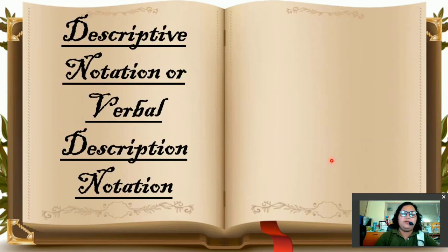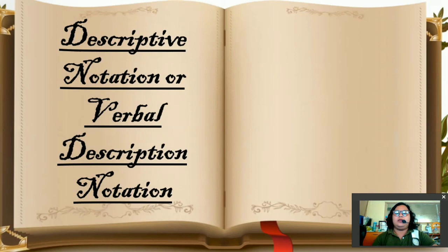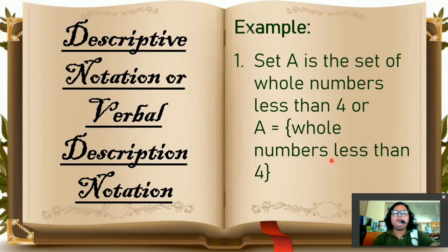Descriptive notation or verbal description notation is a method of describing a set in words. Example, set A is the set of whole numbers less than 4. Or, we can use capital letter equals, then the symbol braces, then we write the description inside the braces. So it would be whole numbers less than 4.